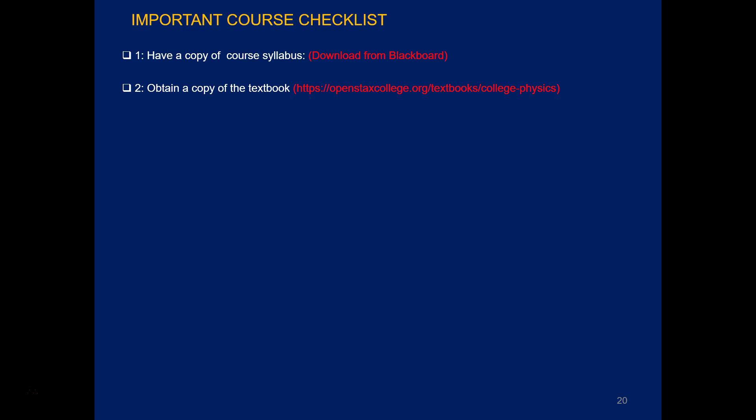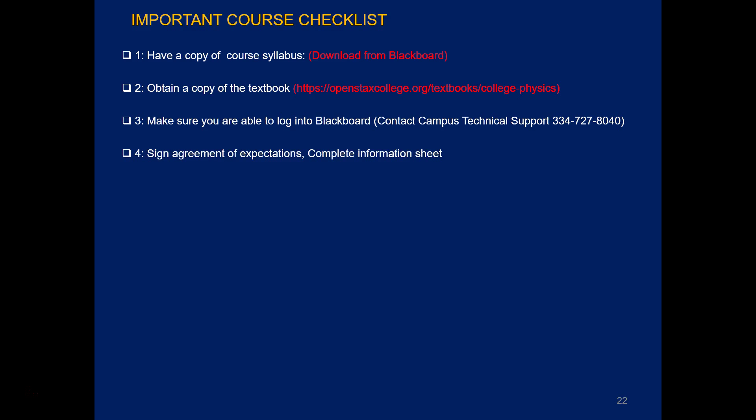Here is an important checklist for this course. Download a copy of the syllabus from Blackboard. Obtain a copy of the textbook through the link shown. Make sure you have access to Blackboard — otherwise contact Campus Technical Support. Sign the agreement of expectations and complete the course information sheet; both documents are available on Blackboard.